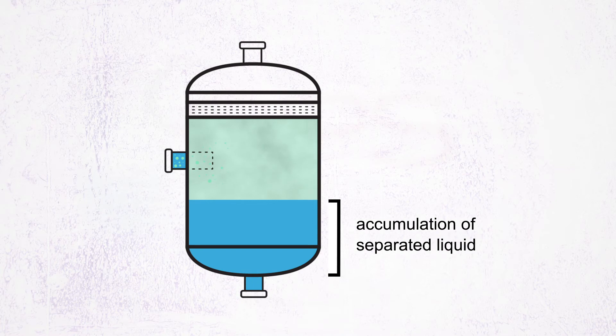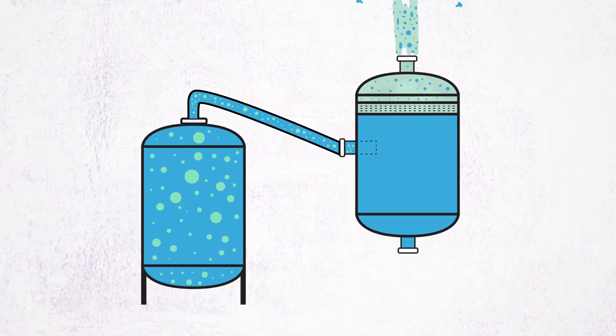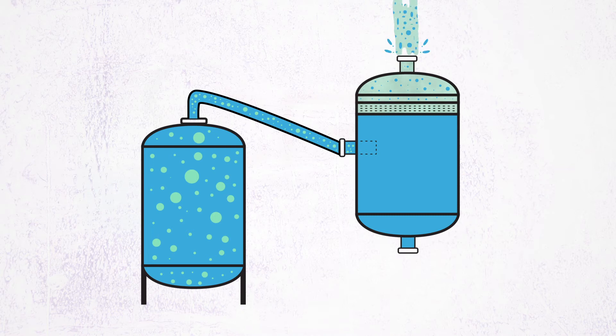A common mistake we come across is a knockout tank that is too small given the size of the relieving equipment and the reactive upset scenario. A knockout tank that is the same size as a reactor or storage tank is often not able to effectively do its job.